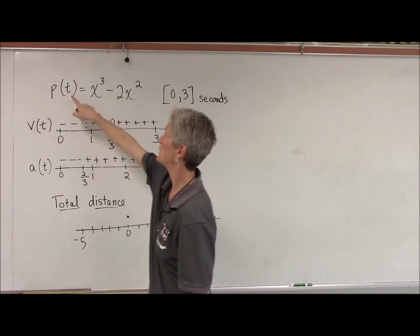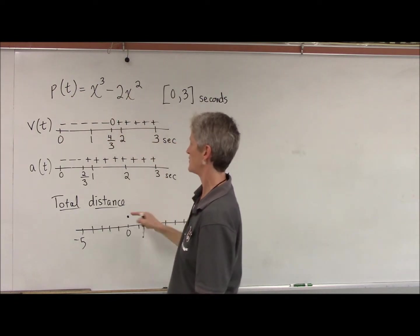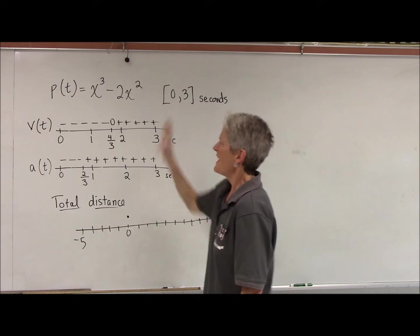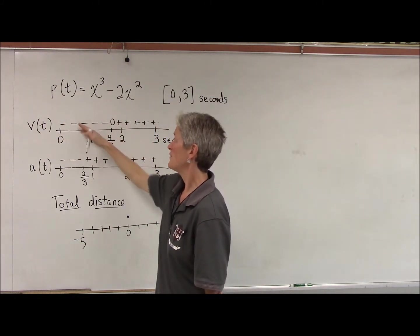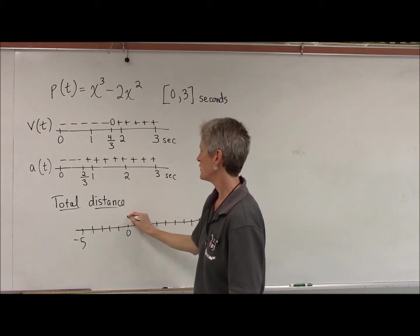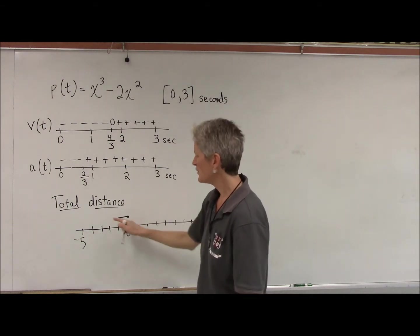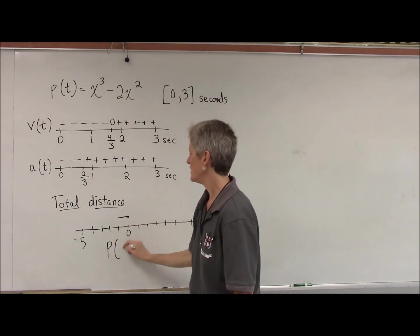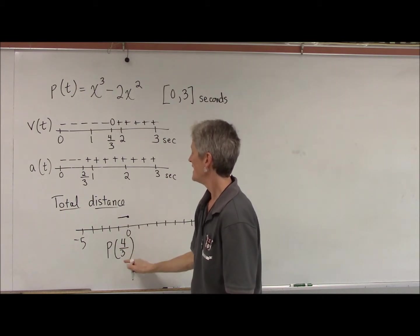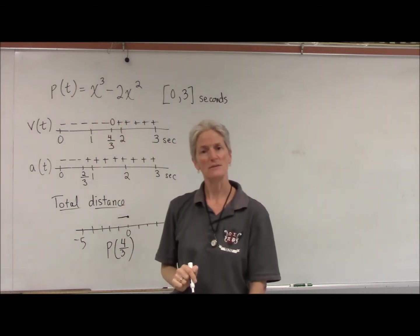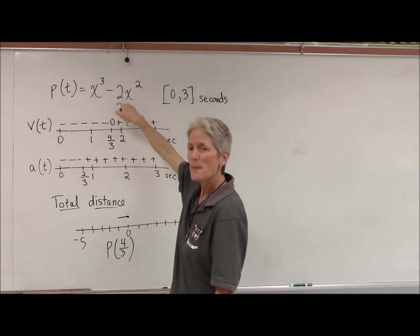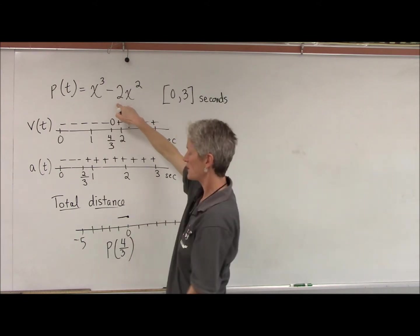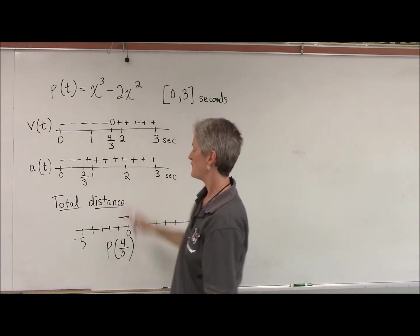Because when I put in 0 for time, I get 0 cubed minus 2 times 0 squared, which is 0. Based on the velocity, the particle is moving to the left for the first 4 thirds of a second. I don't know how far it goes yet, but I can figure out its position by putting 4 thirds into my position function. This will tell me the position — the point on this number line — where the particle is at 4 thirds of a second.